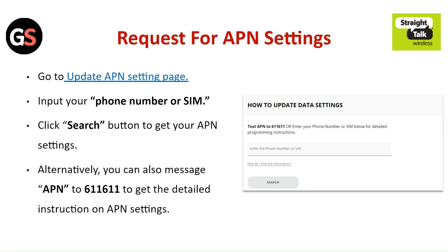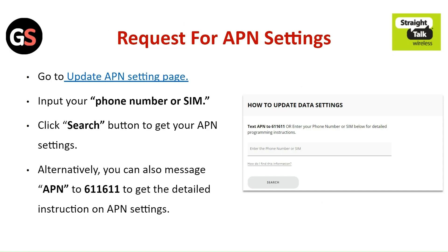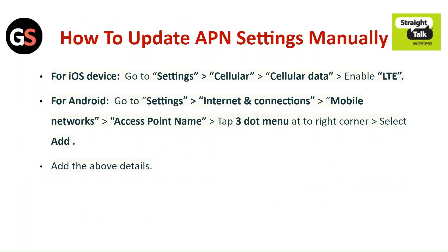To request APN settings, go to the update APN settings page. Input your phone number or SIM, then click the search button to get your APN settings. Alternatively, you can also message 'APN' to 611611 to get detailed instructions on the APN settings.